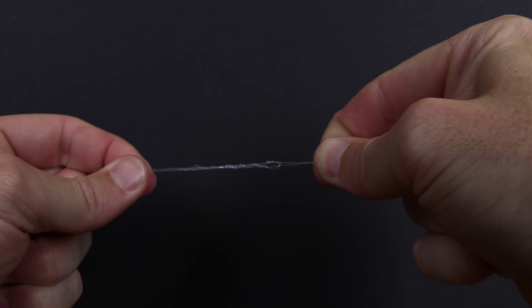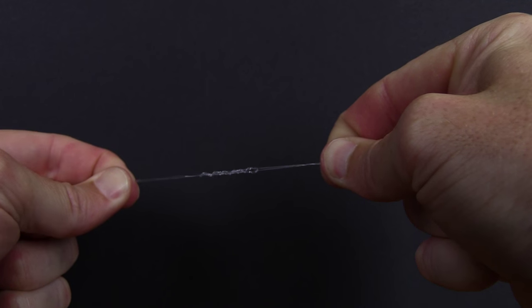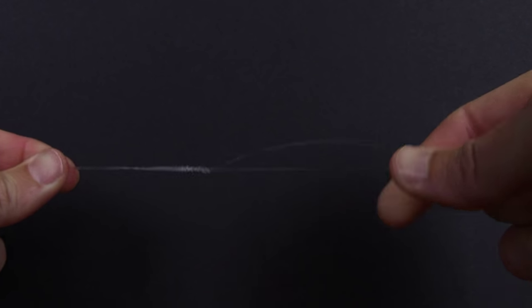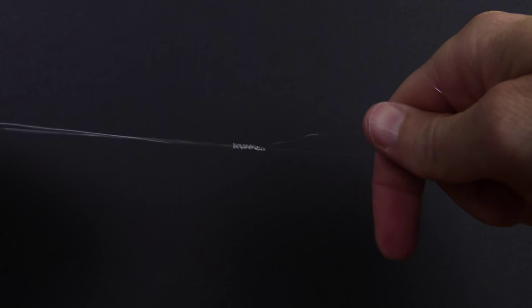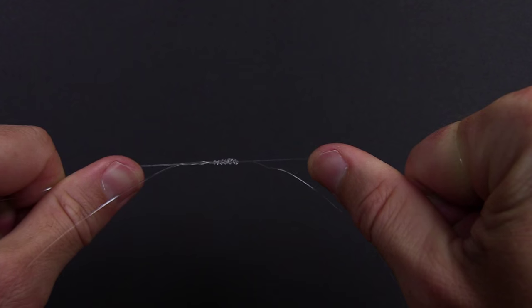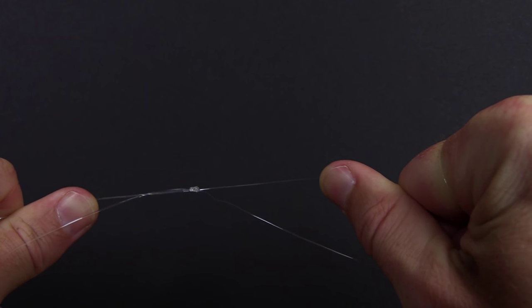Now it's time to really pull on all four strands evenly and just get it nice and tight, as tight as you can. Now I'll let go of the tag ends and then just pull on the two main lines.